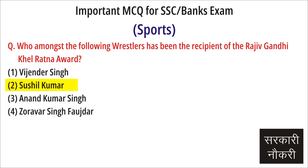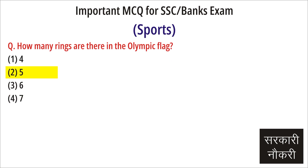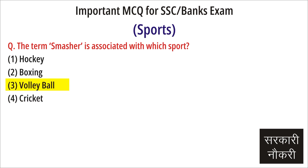Question: With the participation in the Rio Olympics, who has become the first tennis player in the world to have seven appearances in Olympics? Answer: Leander Paes. Question: How many rings are there in the Olympic flag? Answer: Five. Question: The term 'Smasher' is associated with which sport? Answer: Volleyball. Question: The term 'rollin' is used in? Answer: Hockey.